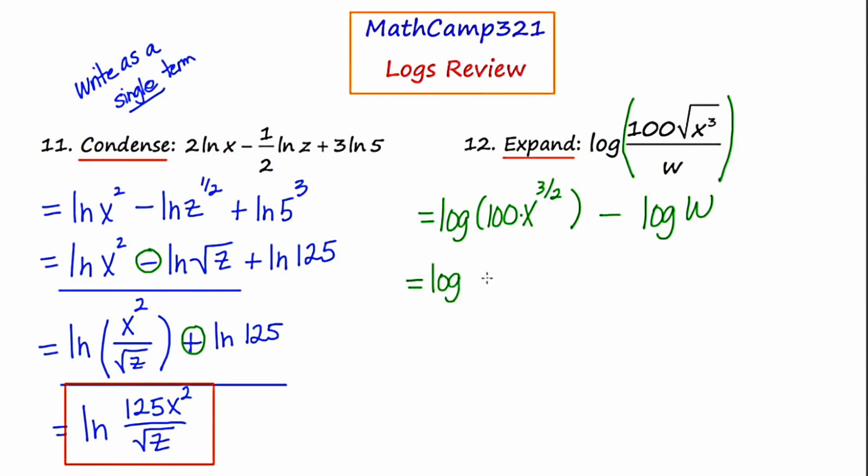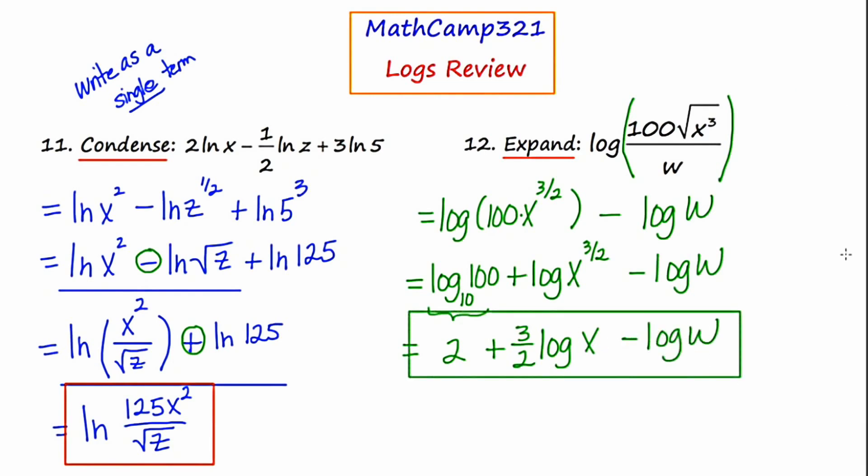This will become the log of 100 plus the log of X to the three halves minus the log of W. If I think about my implied base, there's no base written, so there's an implied base of 10. If I think about this as a schwing, ten to what power is 100? This first term simply turns into the number two. Moving to the second term, there is one more property I can implement, the power rule. That power of three halves can jump down in front. I can write this as three halves log X and then minus log W. I've effectively expanded number twelve from one occurrence of the word log to just two, because that first term turned into the number two.